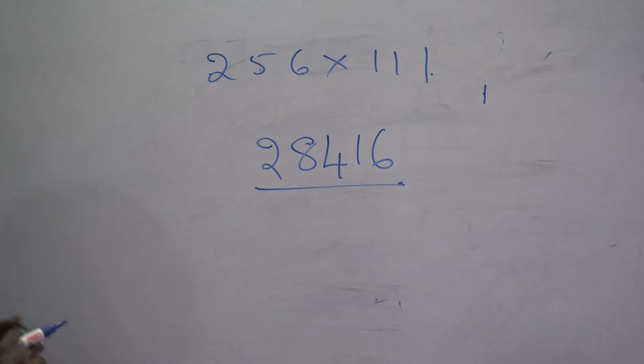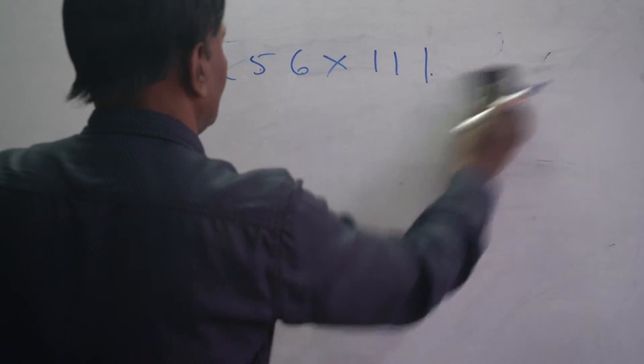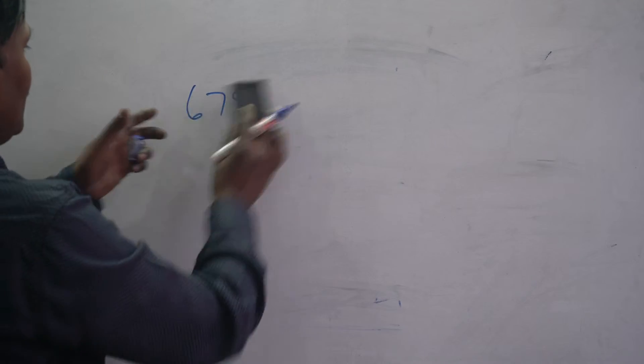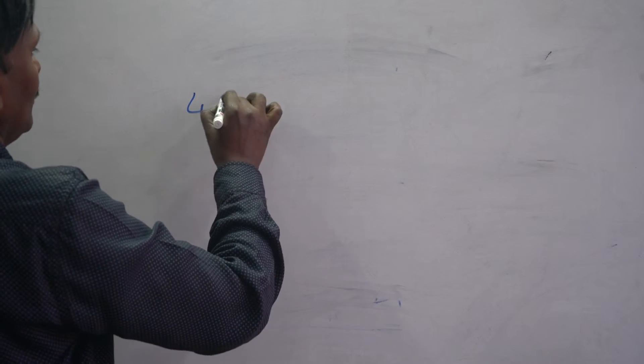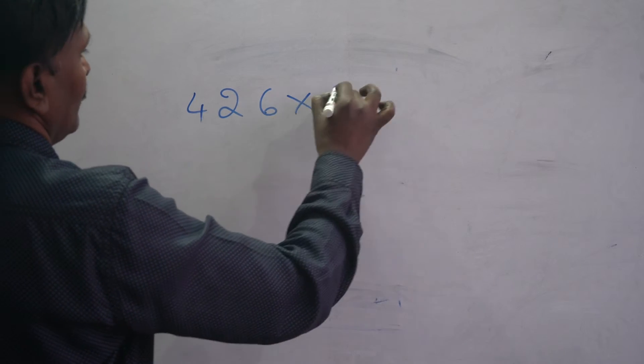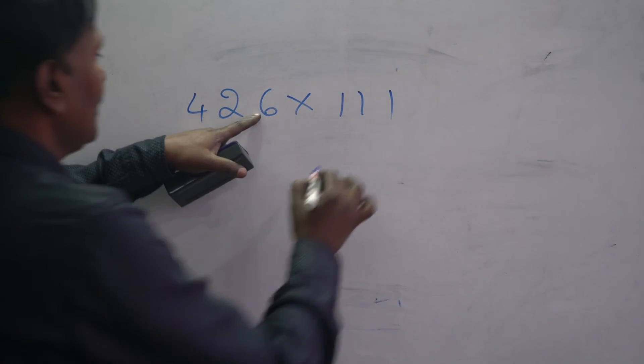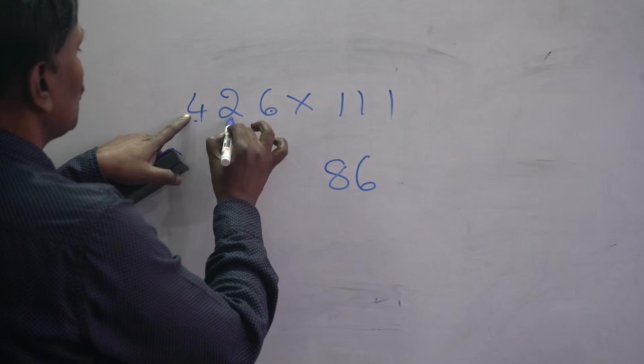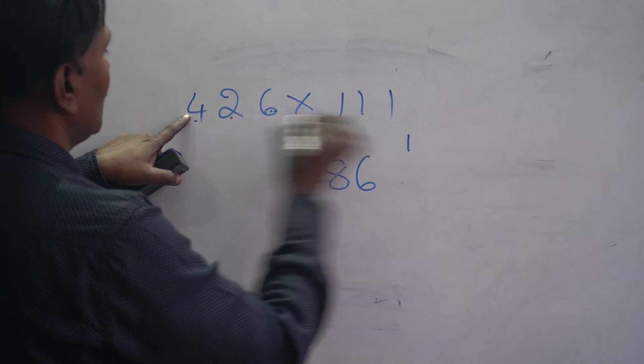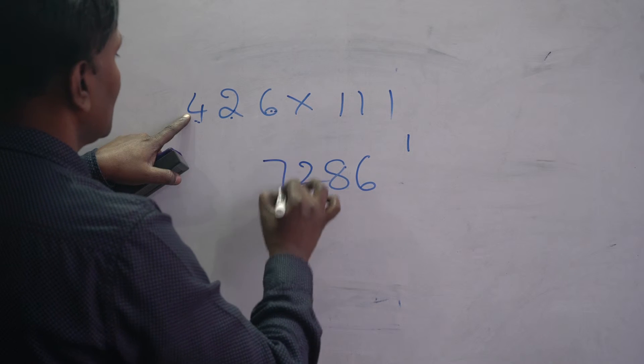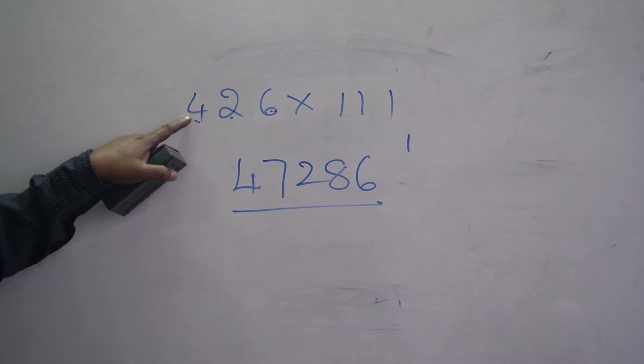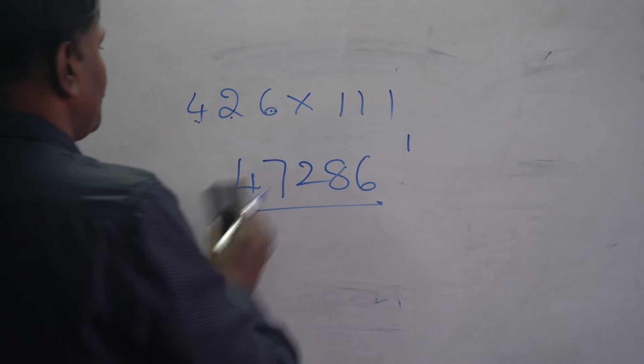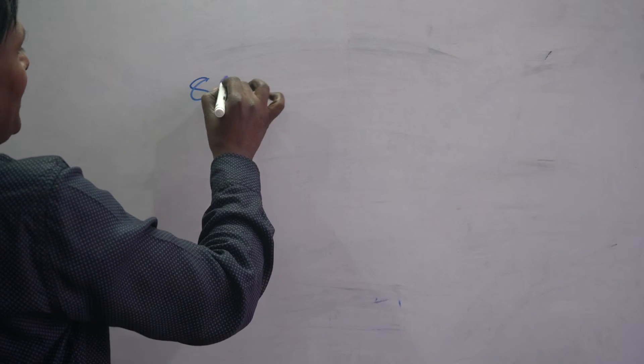Next example: 246 times 111. Here 6, 6 plus 2 is 8, 4 plus 2 is 6, 6 plus 6 is 12, carry 1. 4 plus 2 is 6, 6 plus 1 is 7. Then 4. That is the output: 27,306.